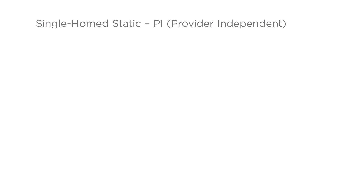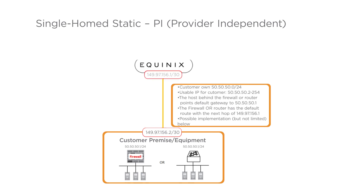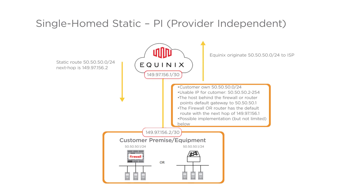Single-home static PI, provider independent. This is similar to the previous example, except the customer wants to use their own subnet and does not want to run BGP. Equinix originates the prefix subnet. Note that the customer's own subnet has to be greater than or equal to slash 24. The diagram uses the customer's slash 24 for the routed subnet, with the slash 30 assigned free of charge by Equinix.